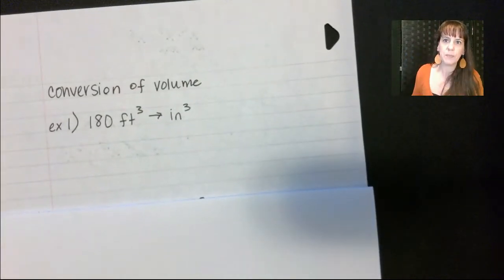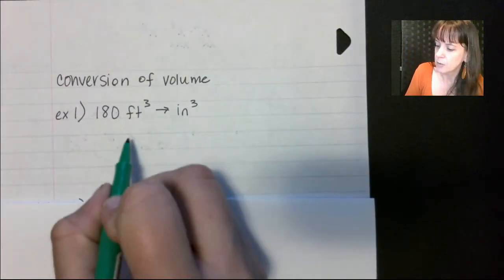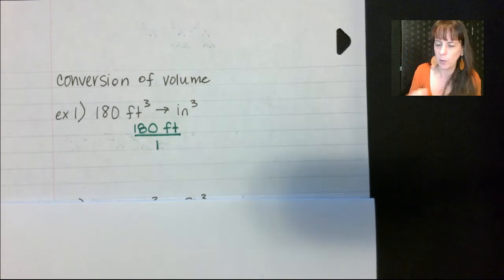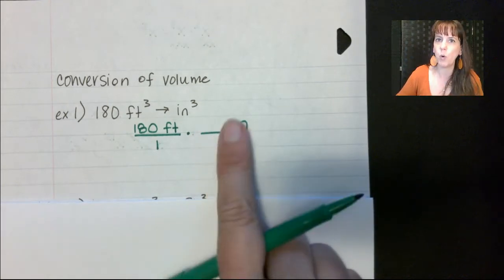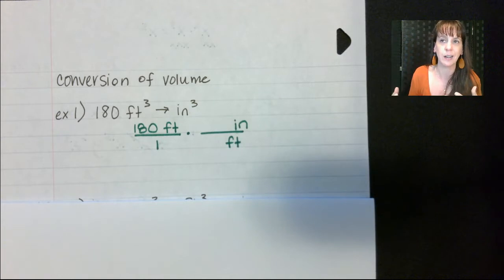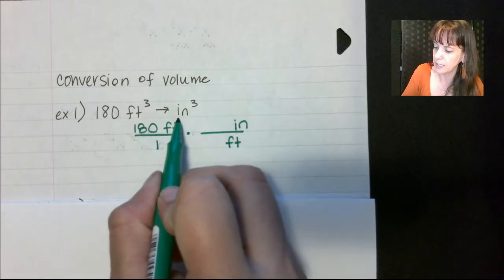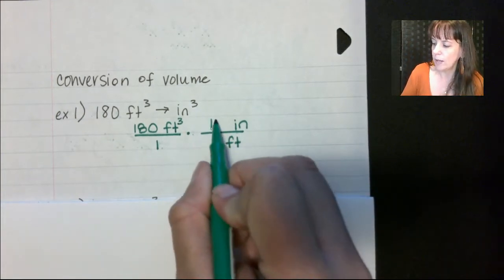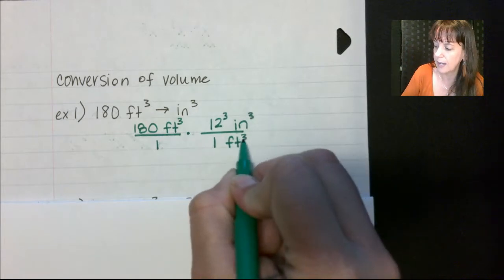Let's talk about converting volume. When we're converting area we have to square everything. When we're converting volume, we have to cube it. So if I want to go from feet to inches, I say 180 feet cubed over one, times a conversion factor. Since I'm getting rid of feet, I put feet downstairs and inches upstairs. This needs to equal one — it's a unit conversion. One foot is 12 inches, but because we are doing feet to the third, we have to cube everything else.